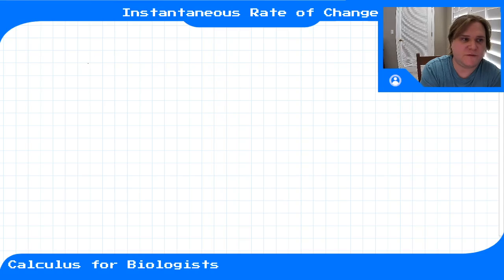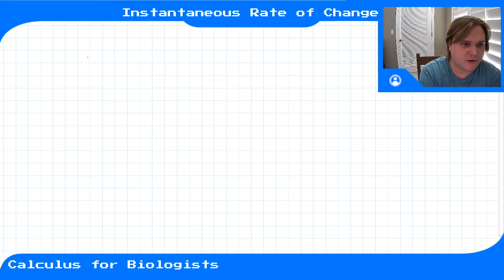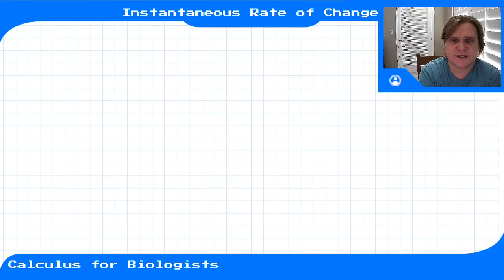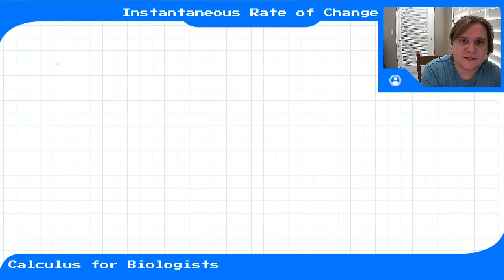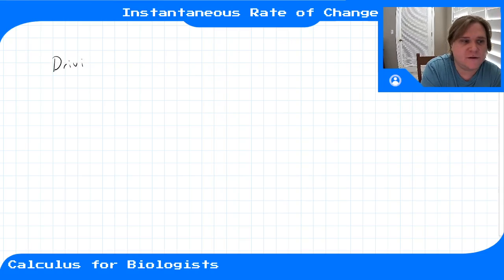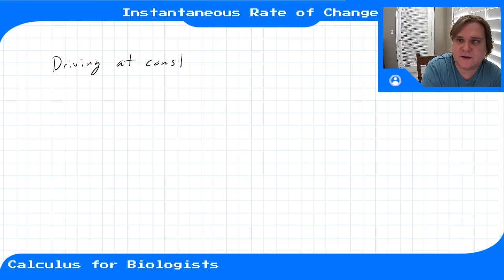In a lot of these videos we've talked about instantaneous rates of change of different functions. Let's clarify what that means. Let's say we are driving a car at constant speed — two miles an hour in a parking lot or something, just slowly moving.